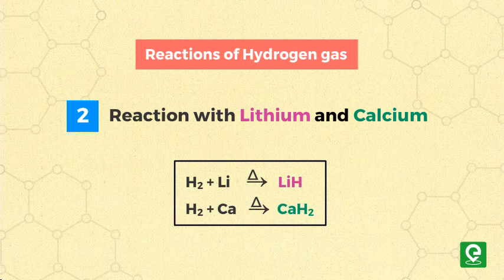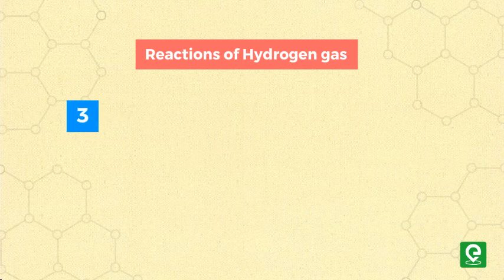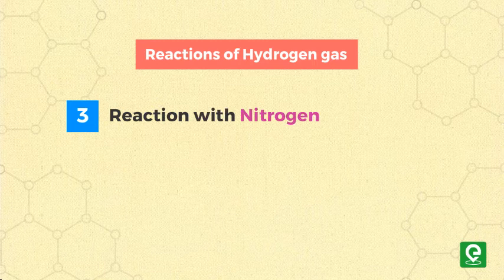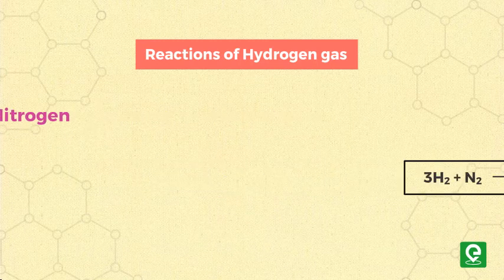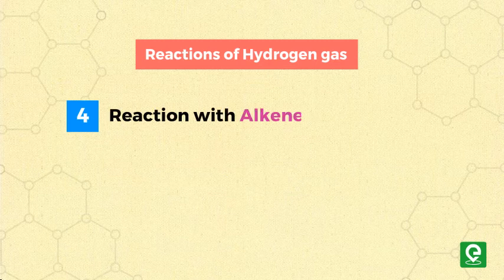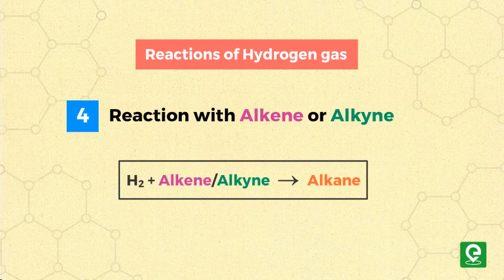3) Hydrogen reacts with nitrogen gas in Haber process to produce ammonia gas. 4) Hydrogen reacts with alkene or alkyne to give alkenes.